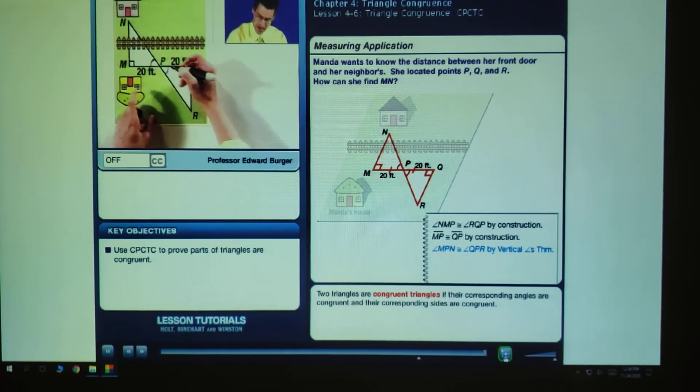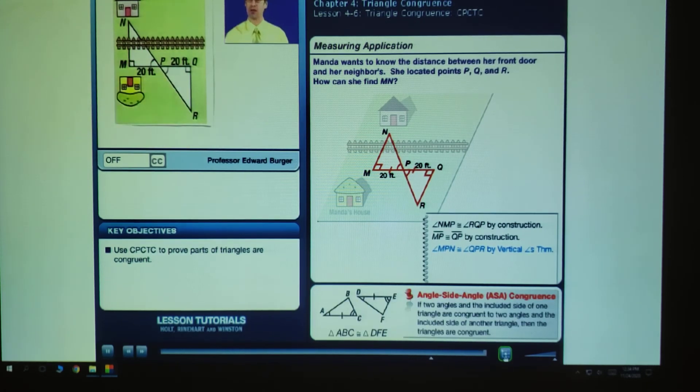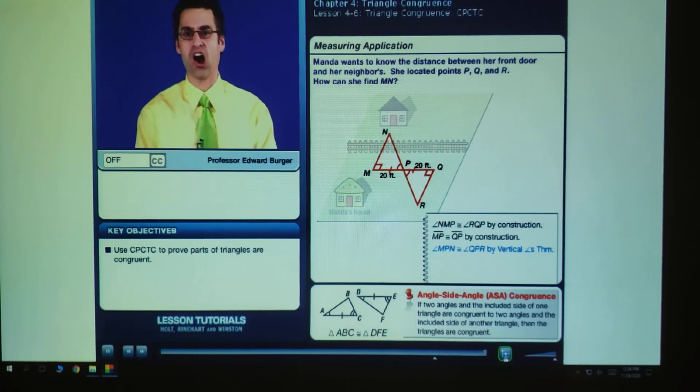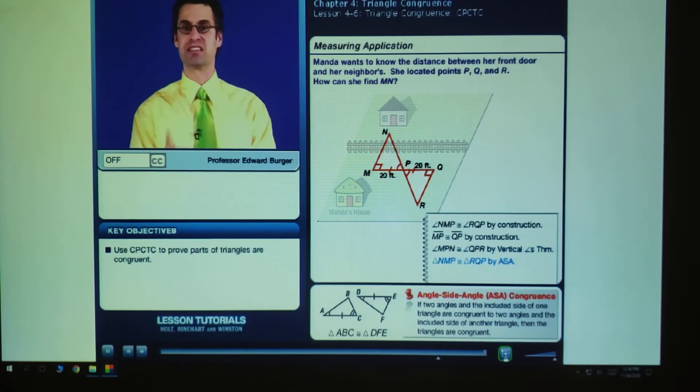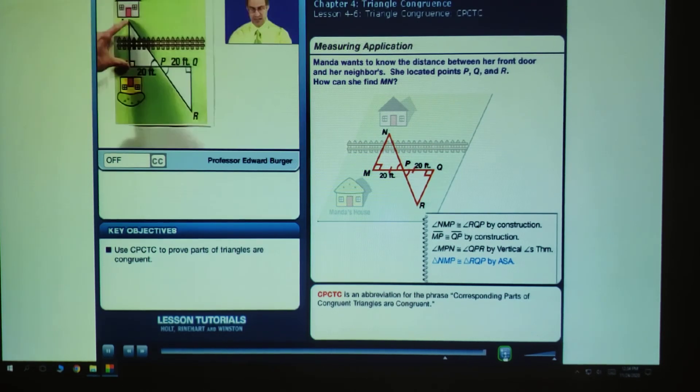So I have two triangles. And what do I notice? I have angle, side, angle, congruent in both. That means the triangles are congruent. That means the corresponding parts are congruent. And what's the part that corresponds to this side? It's this side.